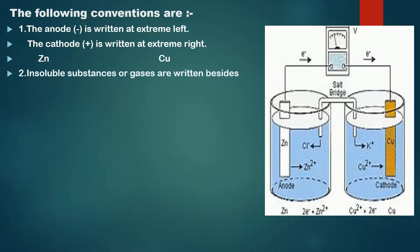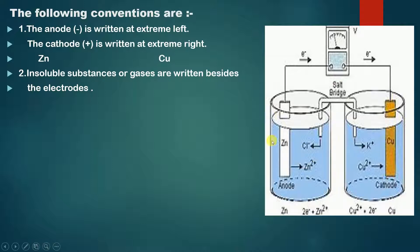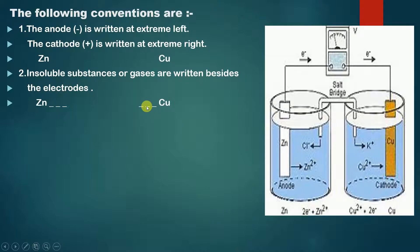The second convention states that insoluble substances or gases are written beside the electrodes. This means that if the electrolytic solutions contain any insoluble substances or gases, they are written beside the electrodes. Since in our example there are no such insoluble substances or gases, there is nothing to write here.